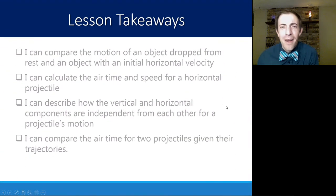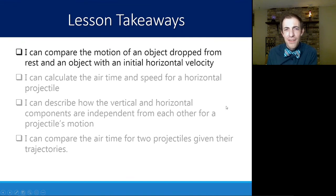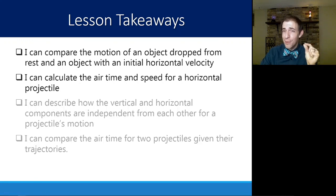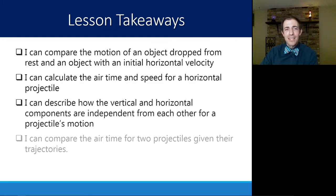So with that in mind, the key takeaways: you should be able to compare the motion of an object that's dropped from rest and an object with initial horizontal velocity. So just like we saw with those billiard balls, they land at exactly the same time, and you should be able to describe how to figure out that time. So with that, calculate the airtime and speed for a horizontal projectile. It should be pretty straightforward because it's exactly the same as if you were to drop it from rest. You should be able to describe how vertical and horizontal components are independent from each other and how they can be used to create that projectile motion parabolic arc. And then you should be able to compare that airtime for two projectiles given trajectories. The key thing here is the higher it goes, the longer it hangs in the air.